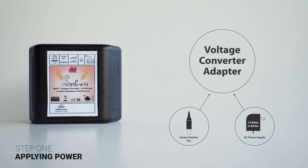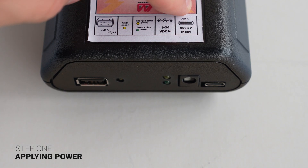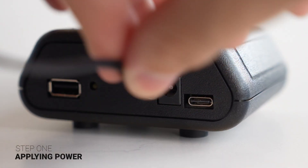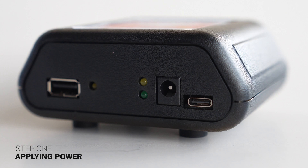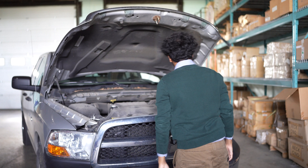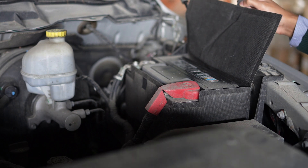Voltage converter adapters: if you're using an adapter equipped with a voltage converter, or VC for short, then a 12 watt or better DC power supply with a center positive pin barrel jack connector can be used, connected to the port marked 9 to 36 VDC in. VC adapters are capable of taking a power input of between 9 and 36 volts and will step down the voltage to 5 volts for use with a connected mobile device. When used with a proper power supply, VC adapters can also be connected directly into 12 and 24 volt electrical systems, making them a great fit for vehicle or boat.